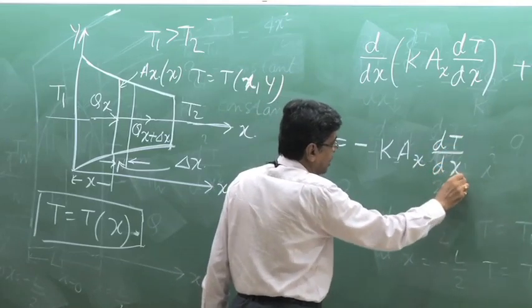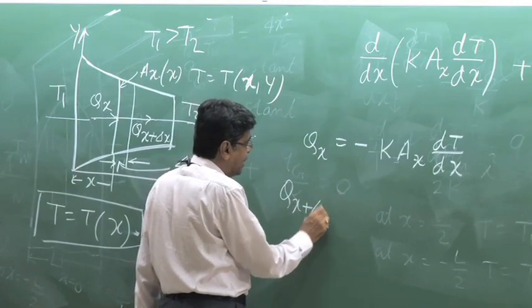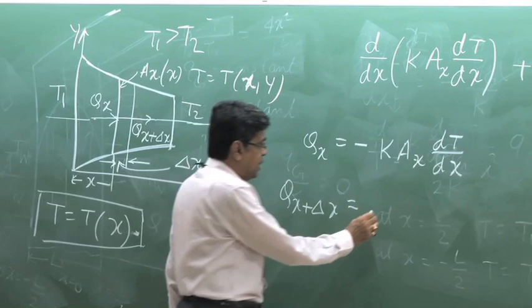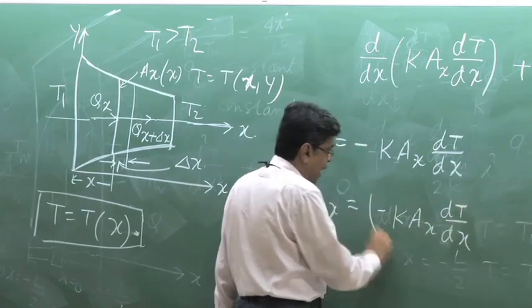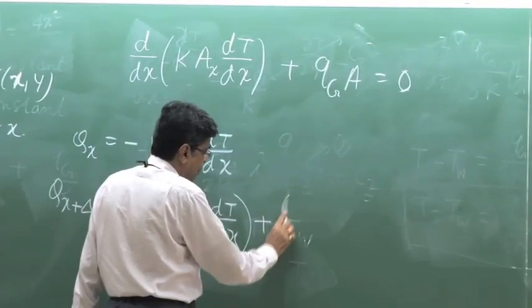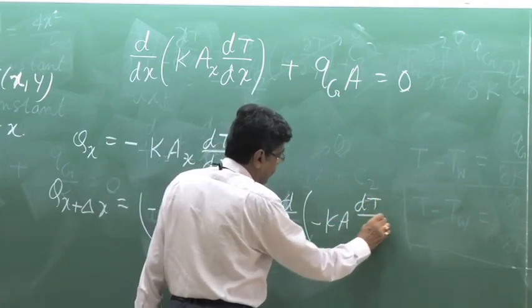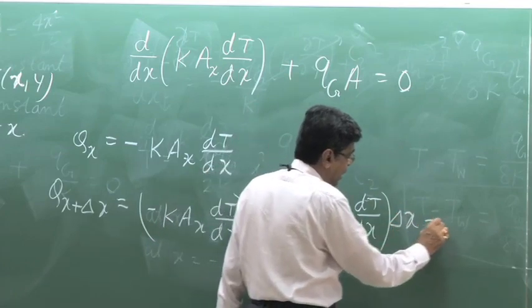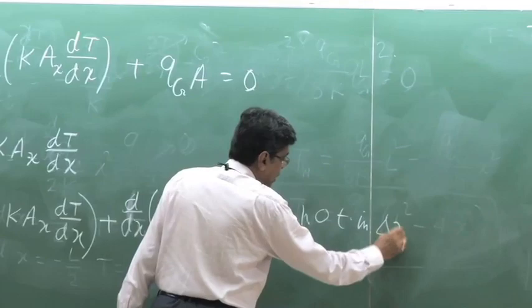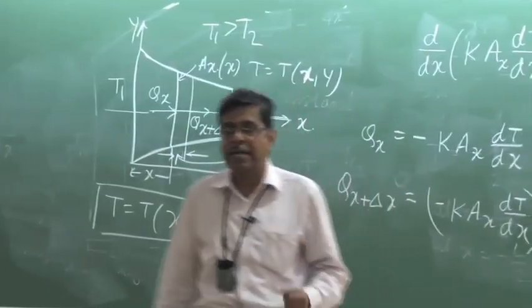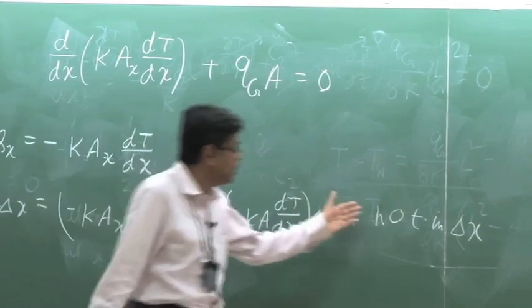By expanding in a Taylor series, Q_{x+δx} equals Q_x plus d/dx of (−K·A·dT/dx) times δx, plus higher-order terms in δx — that is, terms with δx², δx³/3, and so on. Since δx is extremely small and tends to zero in the limit, these higher-order terms are neglected.